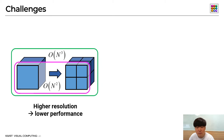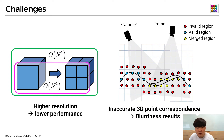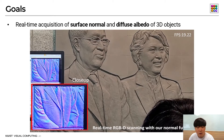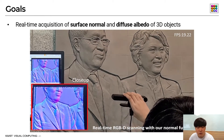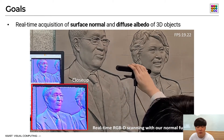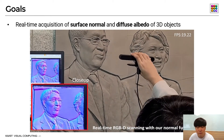First, the previous fusion-based approach limits the geometry resolution to the 3D voxel grid, which could be inefficient compared to 2D representations. Second, the 3D correspondence is often not perfectly accurate due to noisy sensor input, resulting in artifacts when merging surfaces. Our main goal is to solve these challenges to obtain high-resolution surface normals and diffuse albedos of 3D objects in real-time.